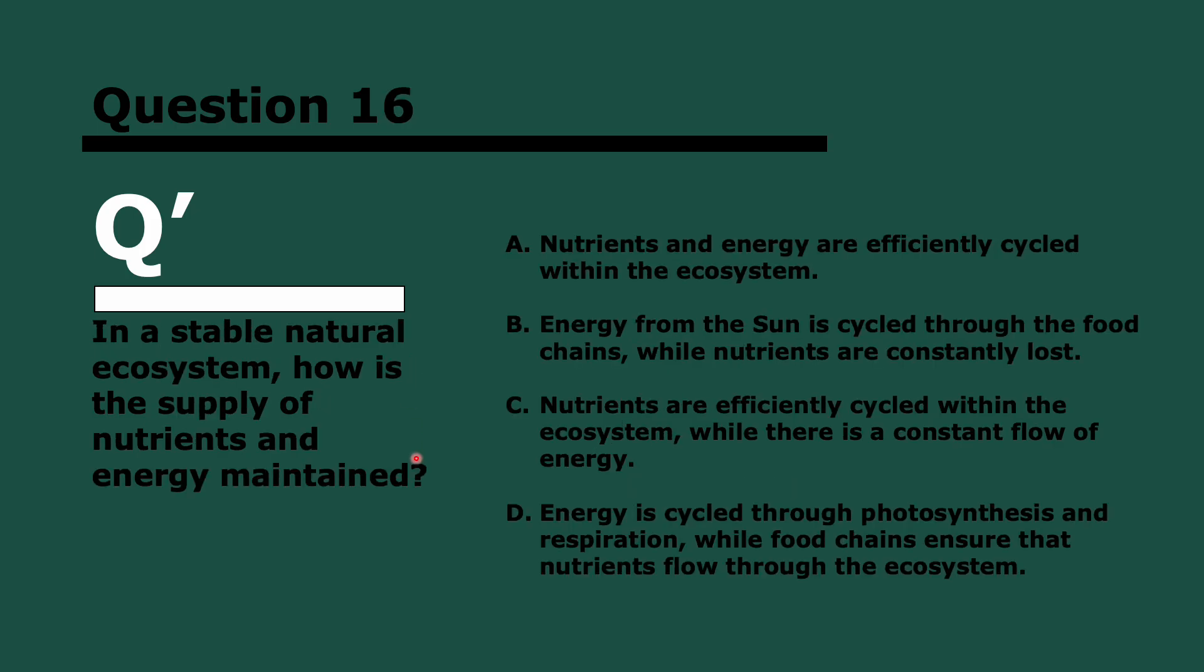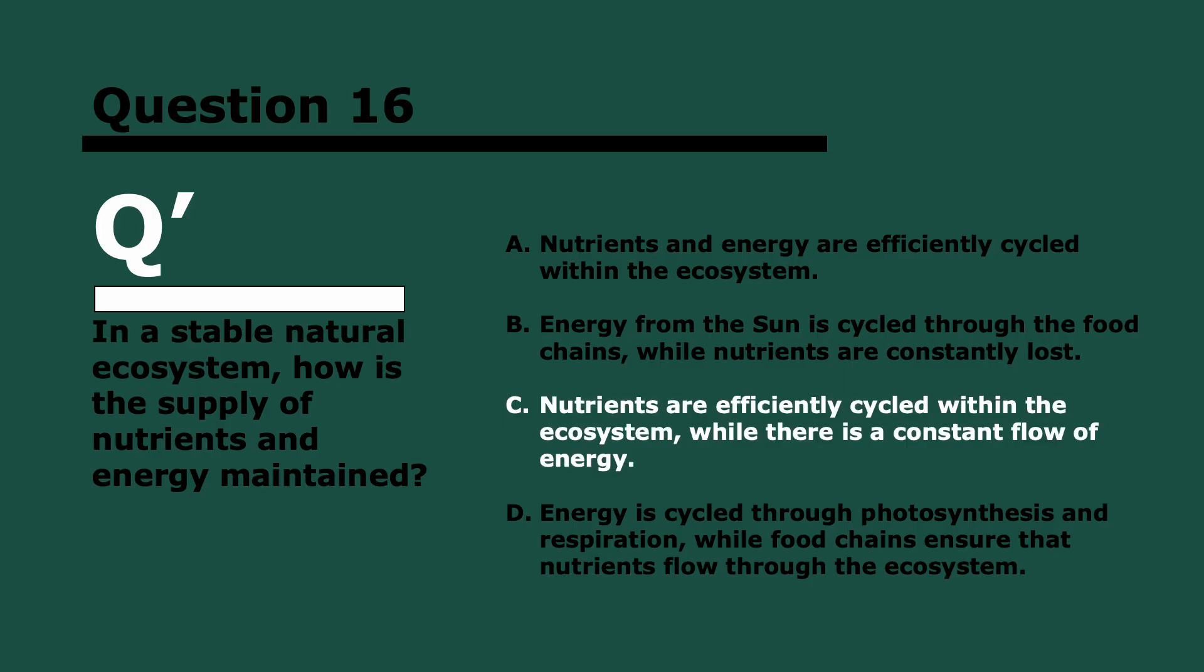Question 16. In a stable natural ecosystem, how is the supply of nutrients and energy maintained? Three, two, and one. Nutrients are cycled, the carbon cycle, the nitrogen cycle. However, energy, there's a constant flow of because of the sun. We constantly get energy and then energy is lost throughout the food chain. Review ecology if you don't remember this. Energy from the sun is not recycled, it's not cycled through the food chains, it's lost. So it's a constant flow.